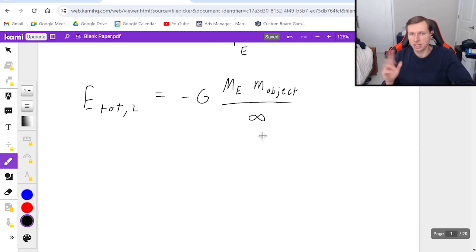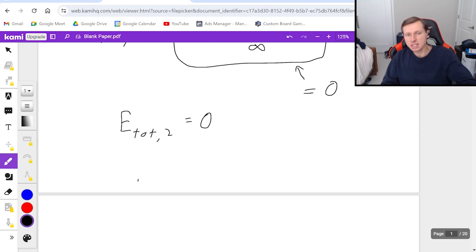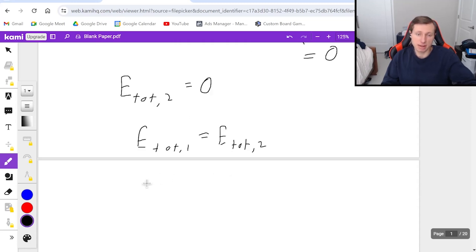One thing you need to know is, in math or physics for that matter, whenever you have an infinity in the denominator, that makes the entire number equal to 0. Meaning, energy total at point 2 is just 0. And since I always want to set e total 1 equal to e total 2 for conservation of energy, that means I have this going on.